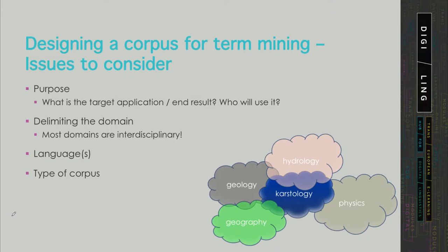You should try to delimit your domain, and most people who have dealt with this topic will agree that most domains are interdisciplinary. Even at the abstract level, a domain will almost certainly neighbor onto several others. For example, a karstology corpus will nearly always contain terms from hydrology, geology, geography, and physics depending on the context. It's best to decide beforehand not to be bothered too much by interdisciplinarity, but on the other hand, exclude texts which would disrupt your term mining project.